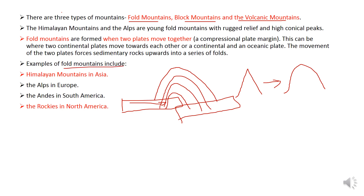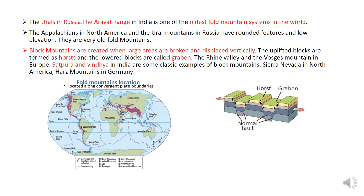Examples of fold mountains include the Himalayan mountains in Asia, the Alps in Europe, the Rockies in North America, the Urals in Russia, and the Aravalli ranges in India — one of the oldest fold mountain systems in the world. The Appalachians in North America and the Ural mountains in Russia have rounded features and low elevation; they are very old fold mountains.